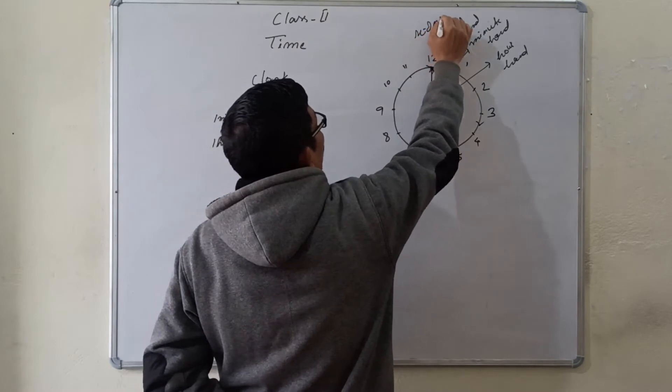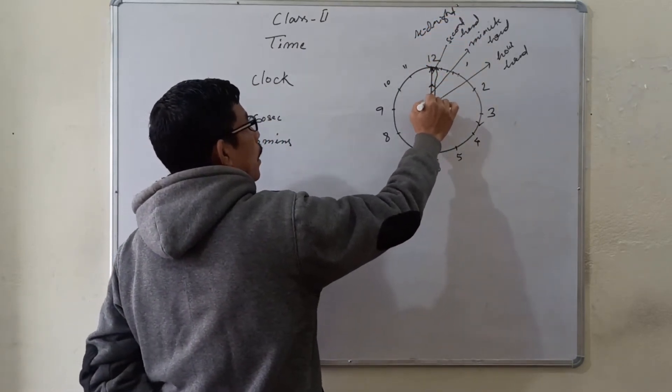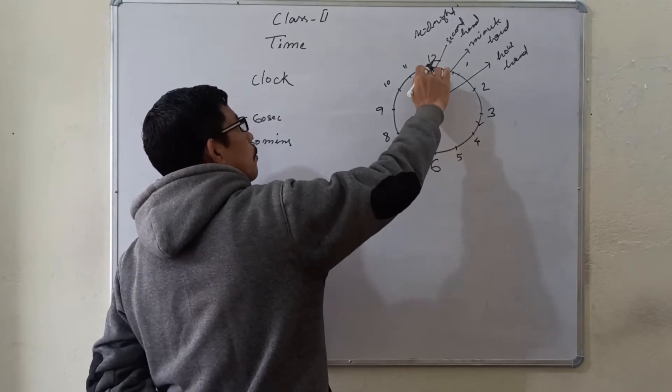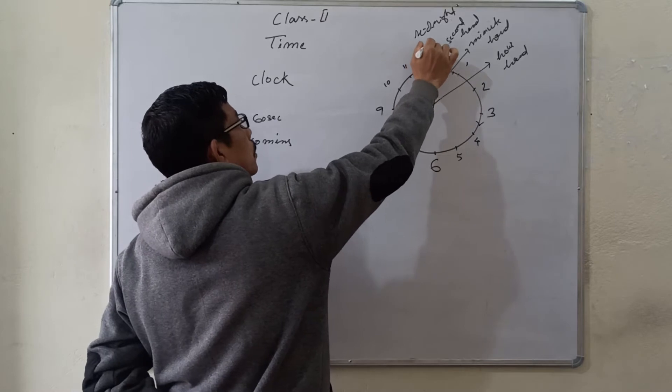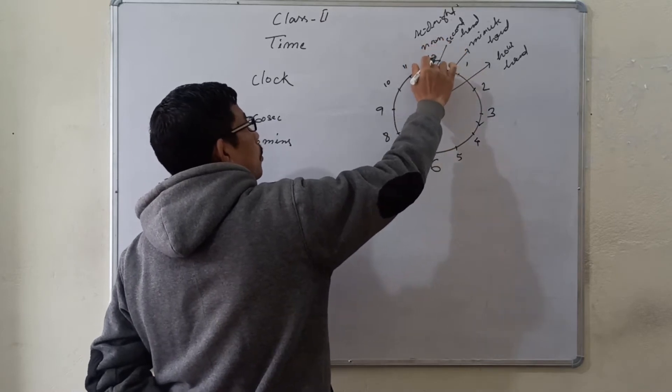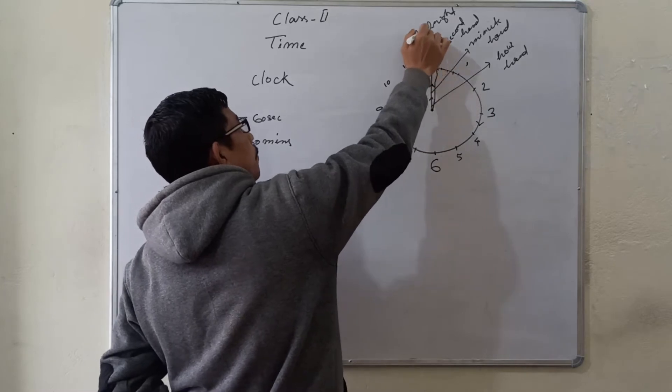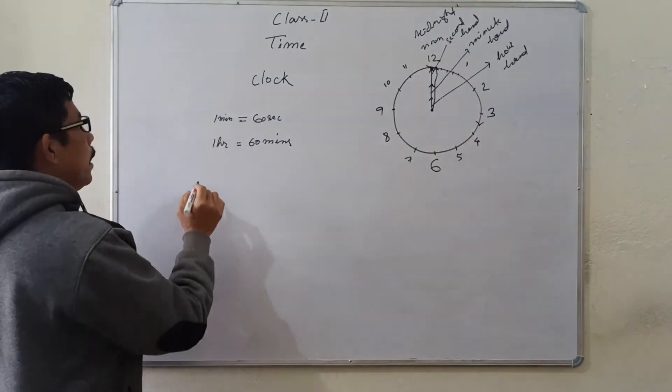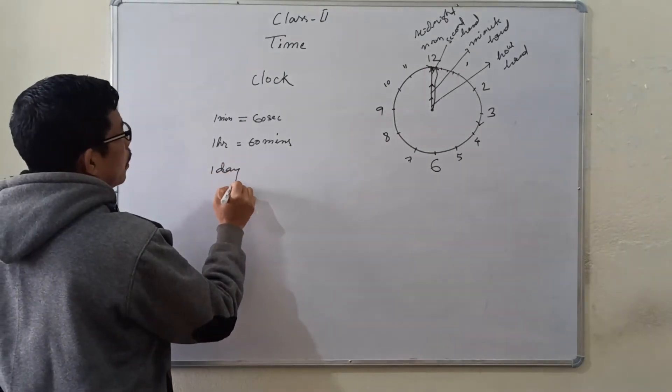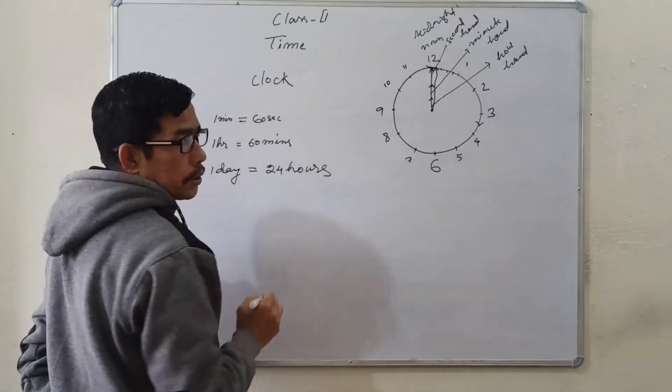From midnight, when the hour hand moves from 12 to 12, it becomes noon. Again, from the noon, moving one more revolution, then it comes to the midnight. That is called one day. So, in one day, there are 24 hours.